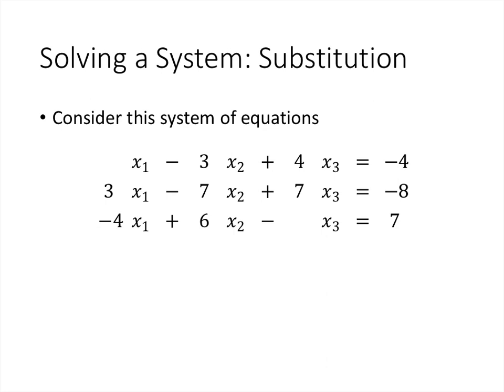But when we look at a more complicated system with three equations and three variables, we would have to take one equation, solve it for one variable, substitute into the other two to reduce to two equations and two variables, and then use substitution again. And imagine extrapolating that to four, five, or six equations — it's quickly going to get out of control in terms of what we have to keep track of.